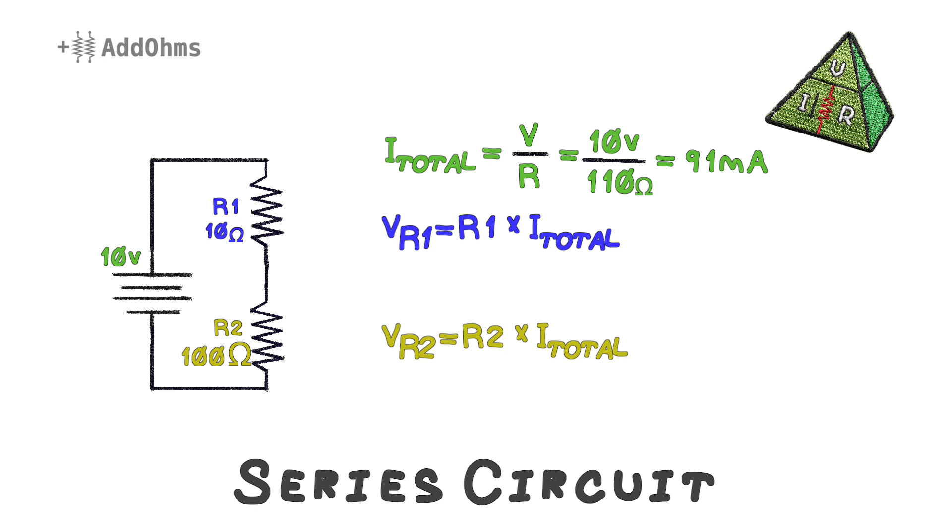The voltage of R1 is 10 ohms times 91 milliamps, which gives us 0.91 volts, or 910 millivolts. Looking at the voltage of R2, it is now 100 ohms times 91 milliamps, which comes out to 9.1 volts.